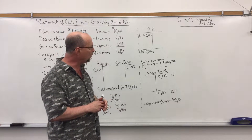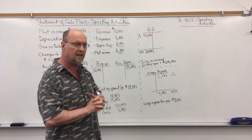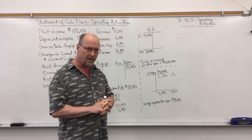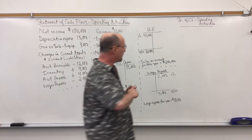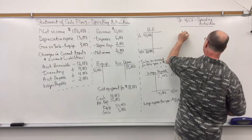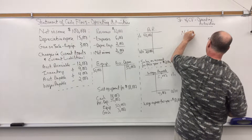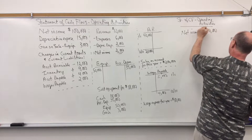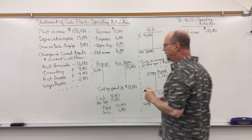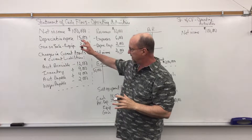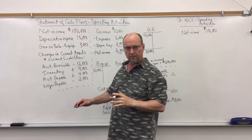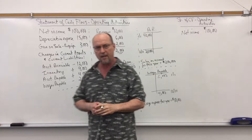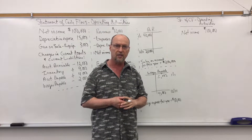When you prepare the operating activity section using the indirect method, your first line item is net income — $100,000. You don't necessarily have to put these in this order, but I typically do. So the first thing we're going to do is add back depreciation expense.